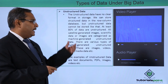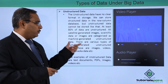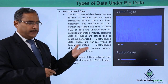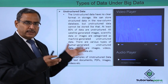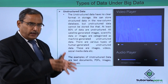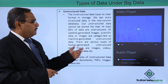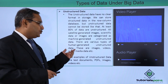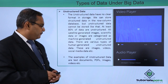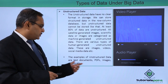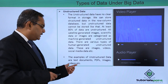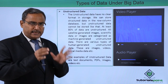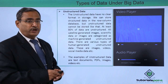All satellite-generated images and scientific data or images are categorized as machine-generated unstructured data. Images sent by satellites fall in the category of unstructured data. There are also various types of human-generated unstructured data: images, videos, social media data, and so on. Examples of unstructured data are text documents, PDFs, images, and videos.